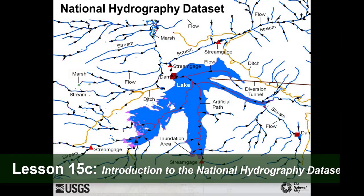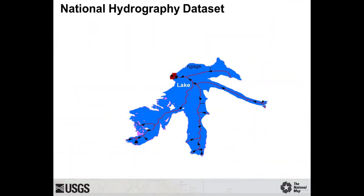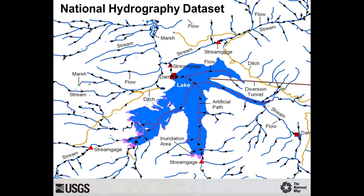An introduction to the National Hydrography Dataset, or NHD. Note that lake features contain artificial flow path features, which permit hydronetwork connectivity to be maintained through water bodies. Although other scales are available, the NHD high resolution, at a 1 to 24,000 scale or better in some locations, is the most up-to-date and detailed hydrography dataset for the nation.